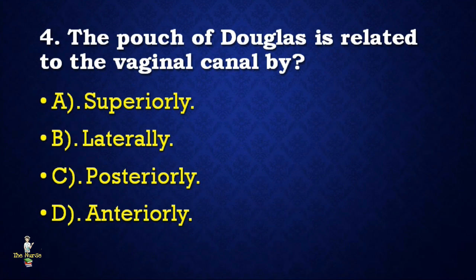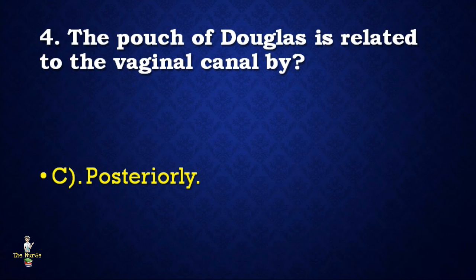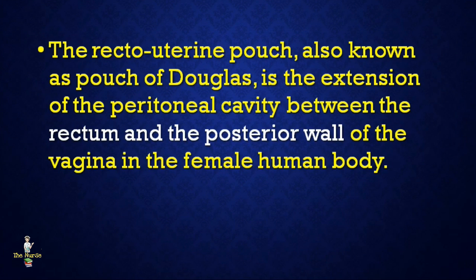Next question: The pouch of Douglas is related to the vaginal canal by — superiorly, laterally, posteriorly, or anteriorly? Correct answer is posteriorly. The recto-uterine pouch, also known as the pouch of Douglas, is the extension of the peritoneal cavity between the rectum and the posterior wall of the vagina in the female human body.